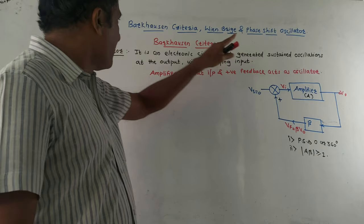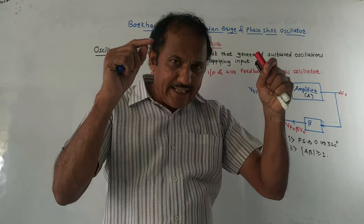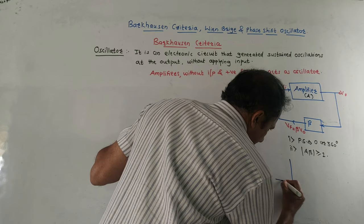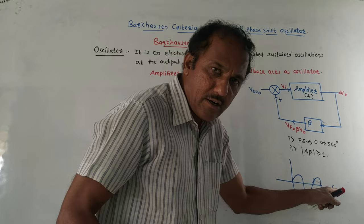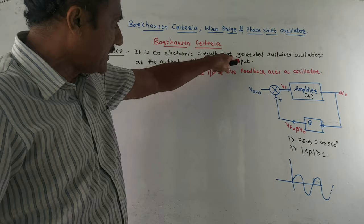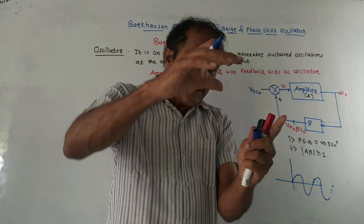This is the most important topic. The first part is Barkhausen criteria. Before discussing this criteria, let us define the term oscillator. Basically, an oscillator is an electronic circuit that produces oscillations — specifically, sustained oscillations. It should continuously keep on generating the waveform, so it is called sustained oscillations.